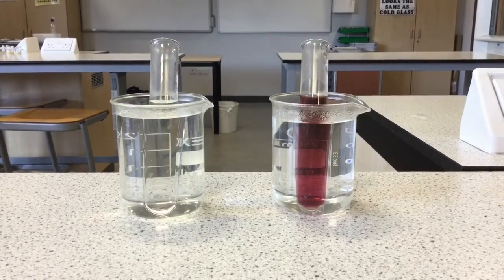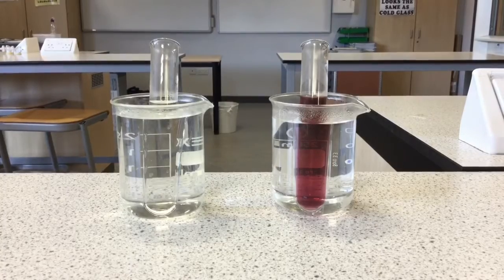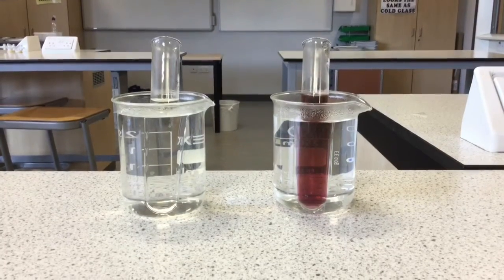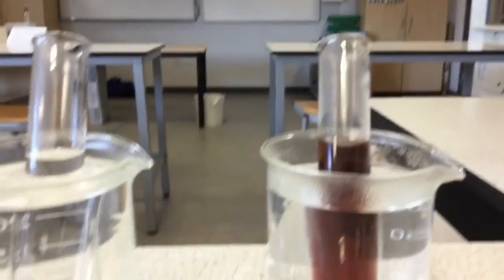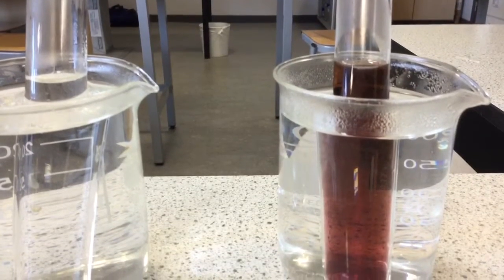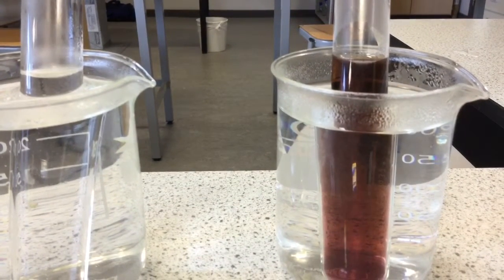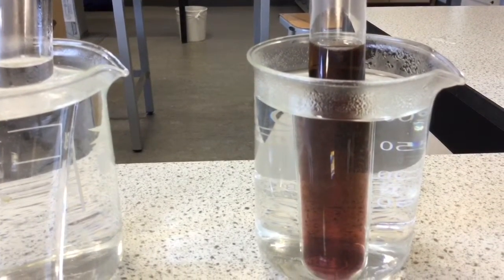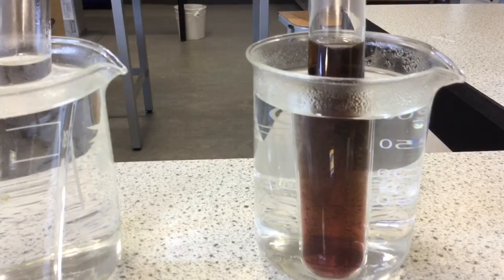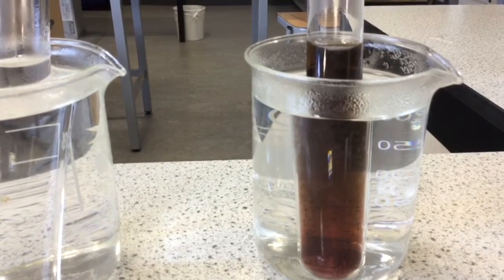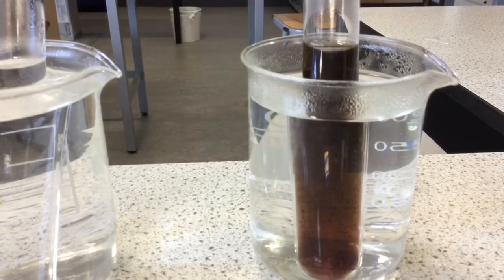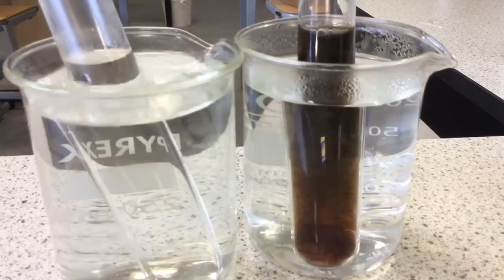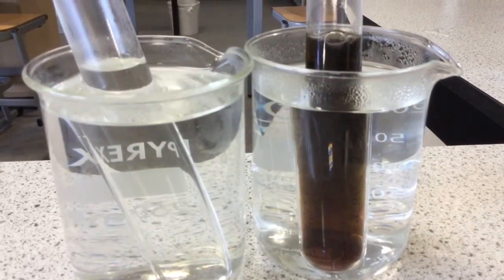However, it doesn't really get going until the Cobalt 2+ has been oxidized to Cobalt 3+. If I move a bit closer, hopefully you can see bubbles of gas starting to be produced as the color changes from the pink of the Cobalt 2+ to a more greeny color of the Cobalt 3+. And you see the reaction really starts to get going now, with nothing much happening in the one without the catalyst.